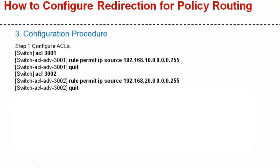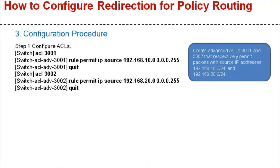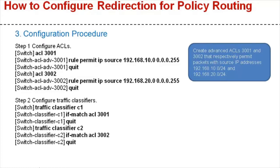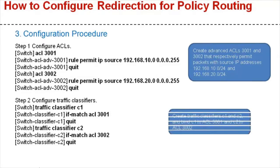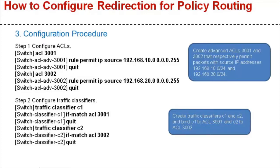Now that the configuration roadmap has been completed, let's go through the configuration procedure on the switch. Step 1: Configure ACLs. Create advanced ACLs 3001 and 3002 that respectively permit packets with source IP addresses 192.168.10.0/24 and 192.168.20.0/24. If ACLs need to permit packets from multiple network segments, you can configure multiple ACLs accordingly. Step 2: Configure traffic classifiers. Create traffic classifiers C1 and C2, and bind C1 to ACL 3001 and C2 to ACL 3002.